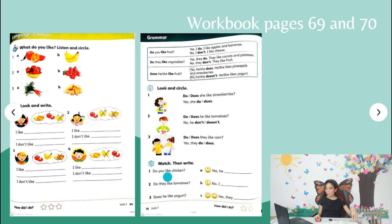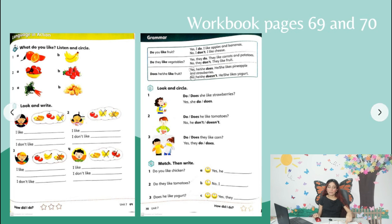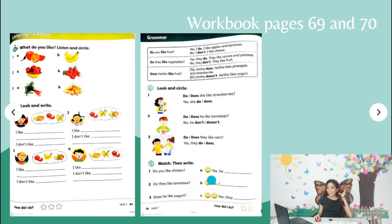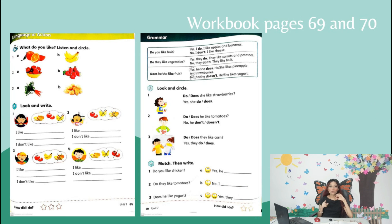Activity 9: Question one — 'Do you like chicken?' Question two — 'Do they like tomatoes?' Question three — 'Does he like yogurt?' The answers are: A — 'Yes, he ___'; B — 'No, I ___'; C — 'Yes, they ___.' You're going to match the questions to the correct answers and then complete — for example, 'Yes, he does' or 'No, I don't.' Use only the auxiliary verb 'do' or 'does' to complete.